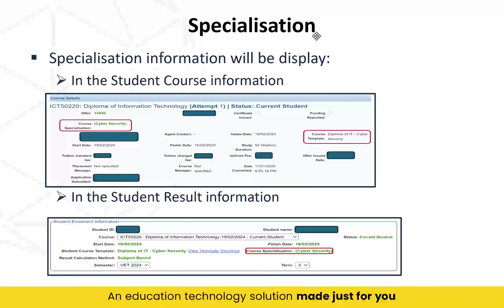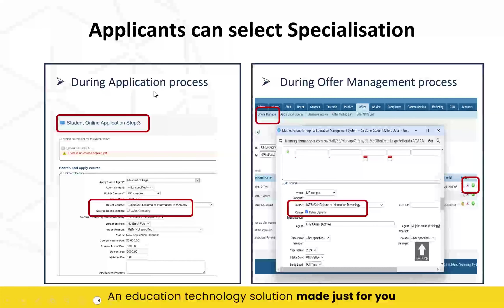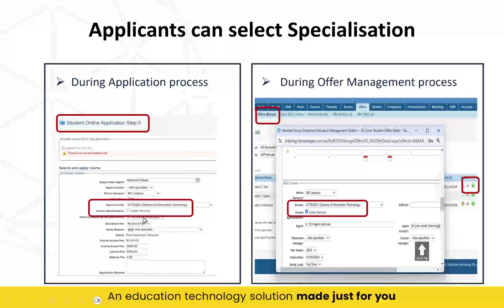How do I actually set up the specialization so that a student has a specialization assigned? There are two ways. During the application process — when you are entering the application under Offer, Apply Online by Admin — in step three of the application, if this course has been set up with specialization, you will see a choice to select it. If there are multiple specializations, tick boxes will appear, and you tick whichever the student has selected — for example, Cyber Security.